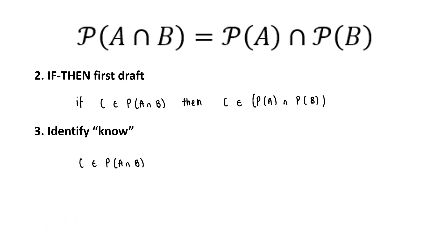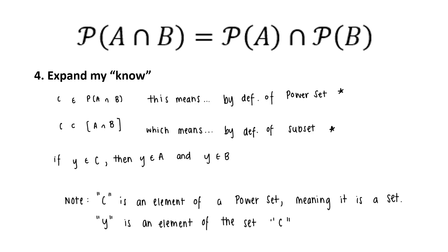My next step is to prove that the power set of A intersect B equals the power set of A intersect the power set of B. I drafted my if-then statement, stating: if C exists within the power set of A intersect B, then C exists within the power set of A intersect the power set of B. I identified my 'know' — the words between the 'if' and 'then' — which is: C exists within the power set of A intersect B. Step four was to expand my 'know' using the definition of power set and the definition of subset, resulting in: if Y exists in C, then Y exists in A and Y exists in B, where Y is an element of set C, and C is an element of the power set of A intersect B.